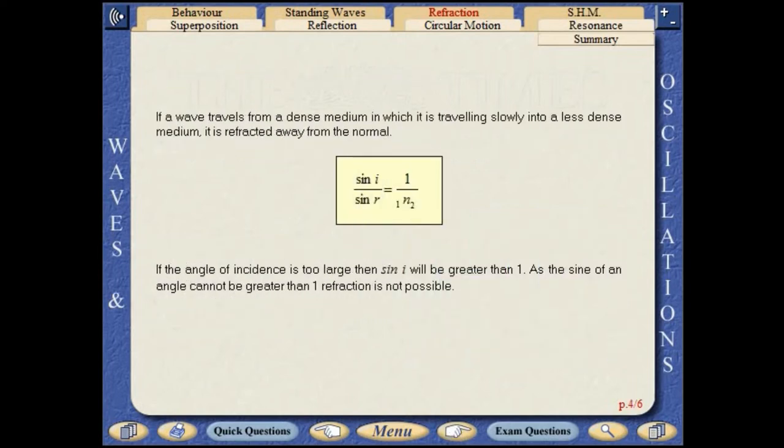If a wave travels from a dense medium in which it is travelling slowly into a less dense medium, it is refracted away from the normal. If the angle of incidence is too large, then sine i will be greater than 1. As the sine of an angle cannot be greater than 1, refraction is not possible.